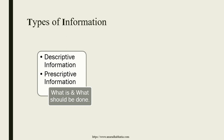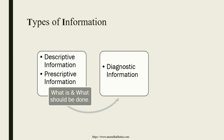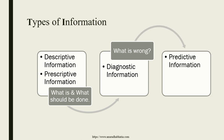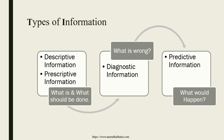Once we understand descriptive and prescriptive information, diagnostic information asks 'what is wrong.' With a large dataset, there may be many white spaces, blank columns, or columns not relevant to the problem statement that need to be removed. Then comes predictive information, which asks 'what would happen' — once we know what is wrong and fix it, we can predict what kind of system we will be building.